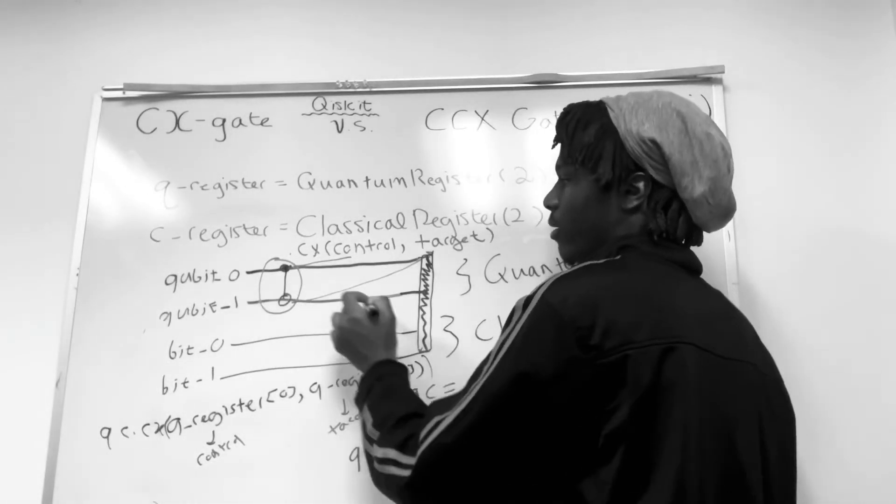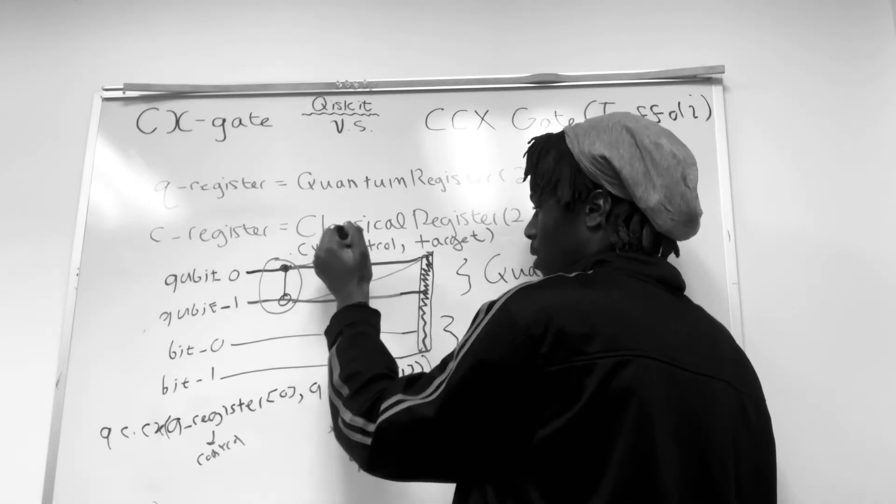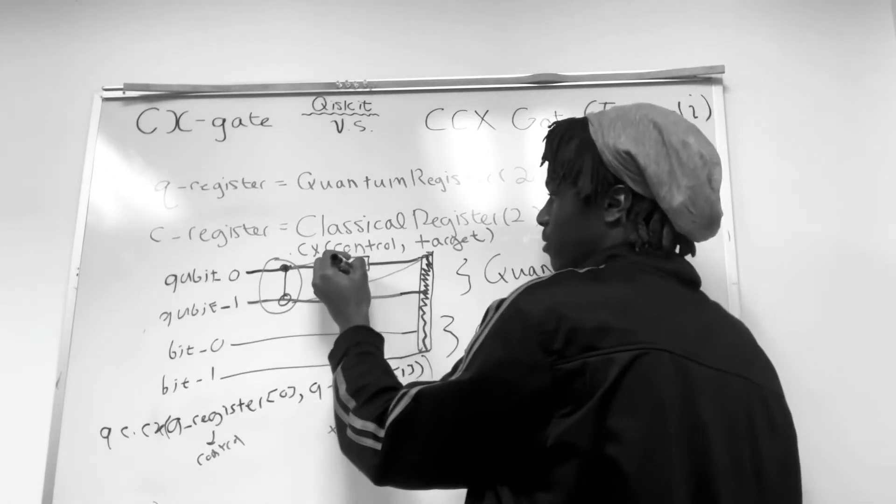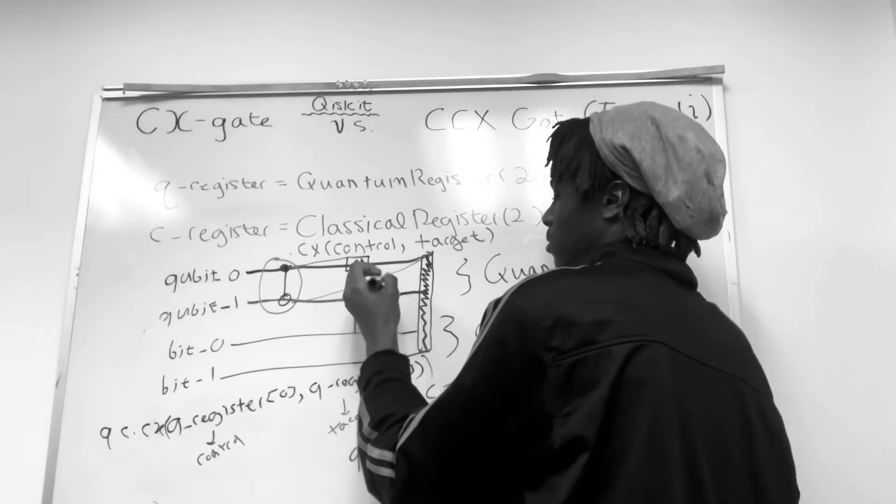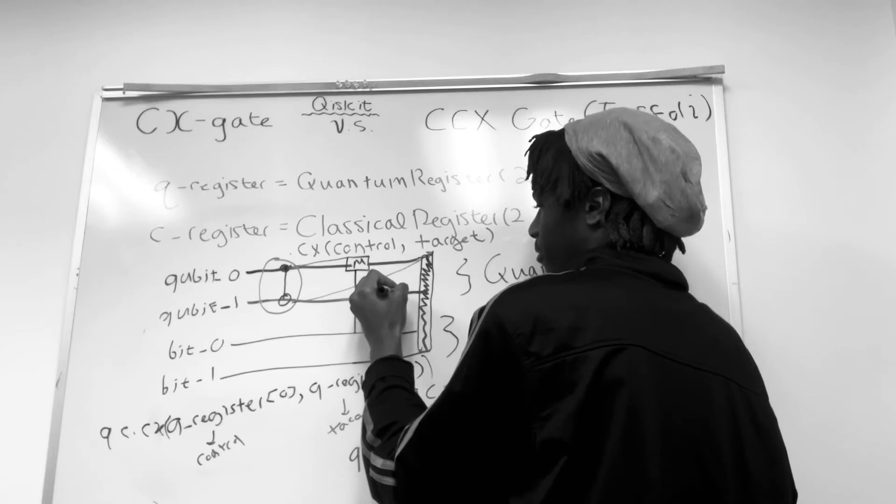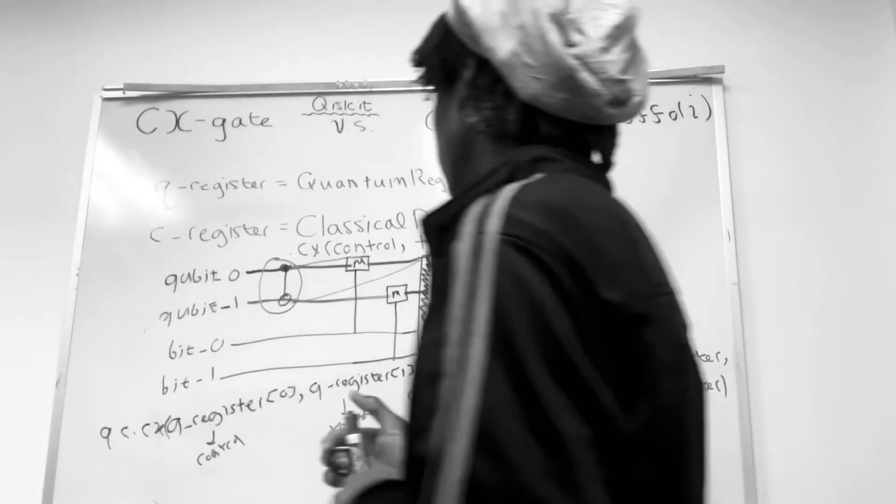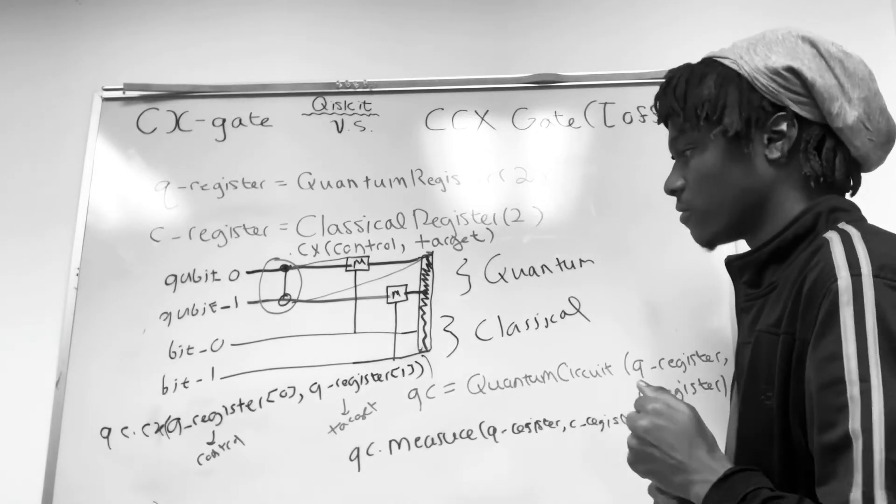Since we applied this already, what's going to happen is we're going to do M. And the question is, where is this going to go? This is going to travel down to this part. Then the second M. It's going to travel down to the second classical vector. So this is how it's going to look. And that's basically it for the CX.